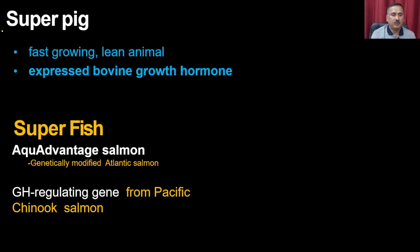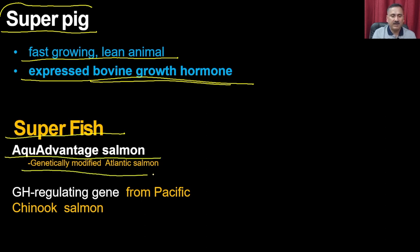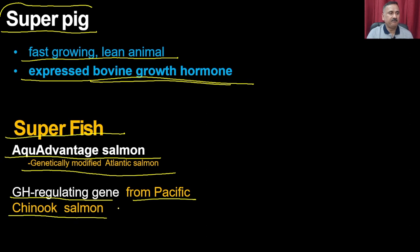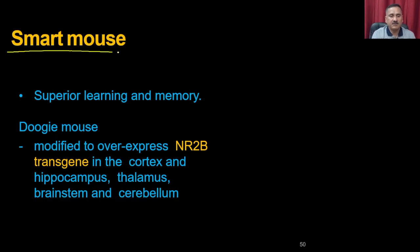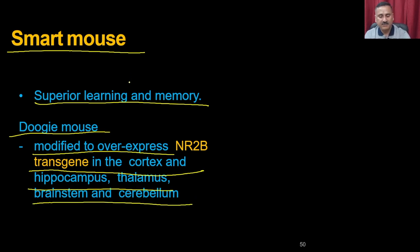The super pig is a fast-growing, lean transgenic animal that expresses bovine growth hormone. The super fish — AquAdvantage salmon — is a genetically modified Atlantic salmon incorporating a growth hormone-regulating gene from the Pacific Chinook salmon. The smart mouse, also called the doogie mouse, has superior learning and memory; it is modified to overexpress the NR2B transgene in the cortex, hippocampus, thalamus, brain stem, and cerebellum, giving it higher cognitive performance.